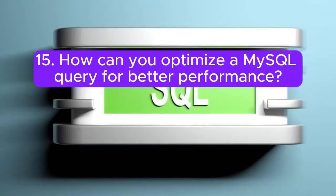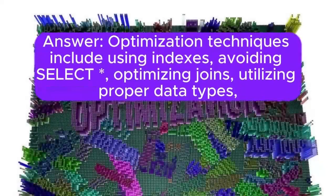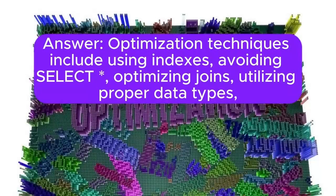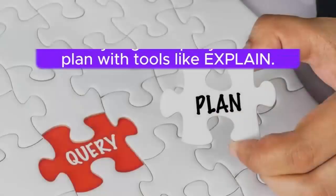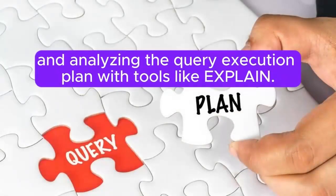Question 15: How can you optimize a MySQL query for better performance? Answer: Optimization techniques include using indexes, avoiding SELECT *, optimizing joins, utilizing proper data types, and analyzing the query execution plan with tools like EXPLAIN.